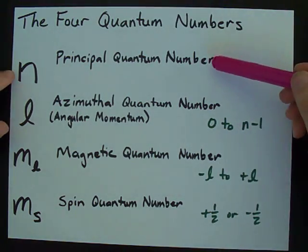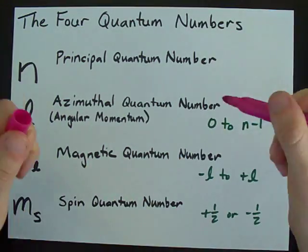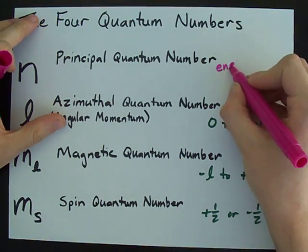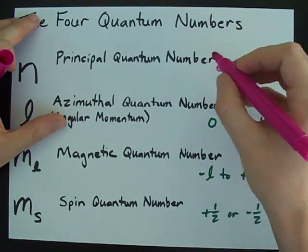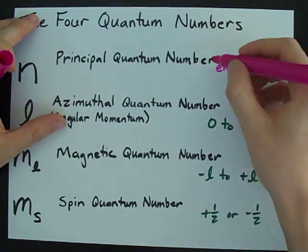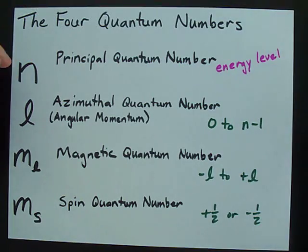The first one is n. It's the principal quantum number and it really just represents the energy level of the atom. You have n equals one for the first shell, n equals two for the second shell, and so on and so on.